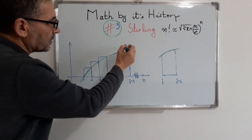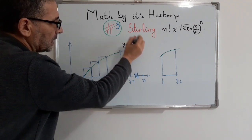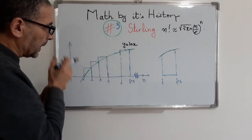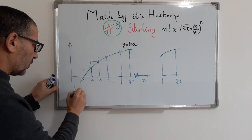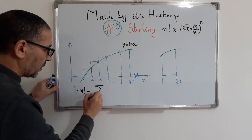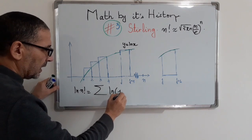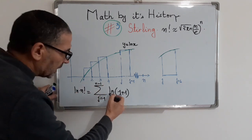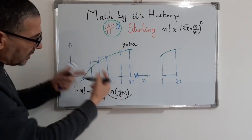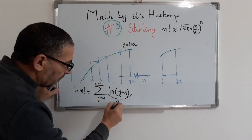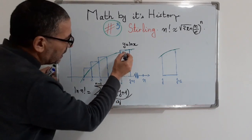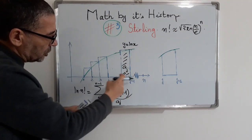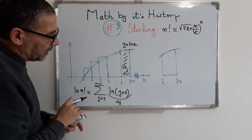To do so we will consider the logarithm function, and we will divide the interval 1 to n into sub-intervals. We write log(n!) as a sum: log(n!) equals the sum from g=1 to n-1 of the integral from g to g+1 of the area between the two lines x=g and x=g+1.